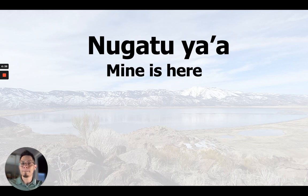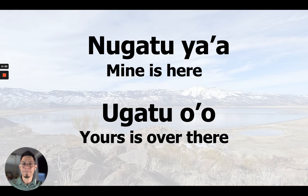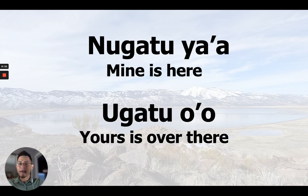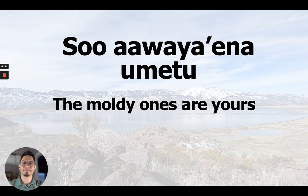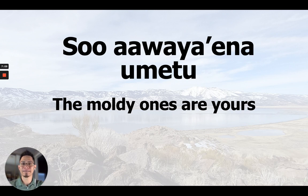Nugat ya'a — mine is here. Ugat o'o — yours is over there. So there's that more of a distinction, that emphatic sense: this is mine, mine is here — nugat ya'a. Ugat o'o — yours is over there. The moldy ones are yours. Not very nice, but hey, sometimes that's what you gotta do.